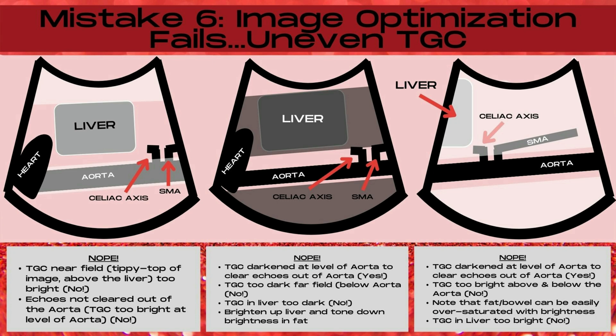However, the TGC is too dark in the far field below the aorta, and the TGC in the liver itself is also too dark. So at the level of the aorta the TGC is correct, but you want to brighten up the TGC at the level of the liver, tone down the brightness of any fat between the liver and the aorta, and brighten up the very bottom of your image below the aorta.